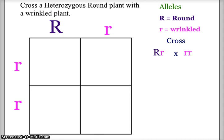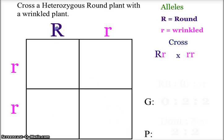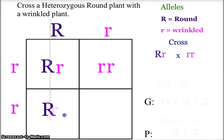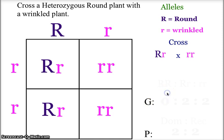We are now ready to do our cross, going column to row: capital R with lowercase r, lowercase r with lowercase r, capital R with lowercase r, and lowercase r with lowercase r. We now look at the ratios. The genotypic ratio follows the order of homozygous dominant, heterozygous, homozygous recessive.